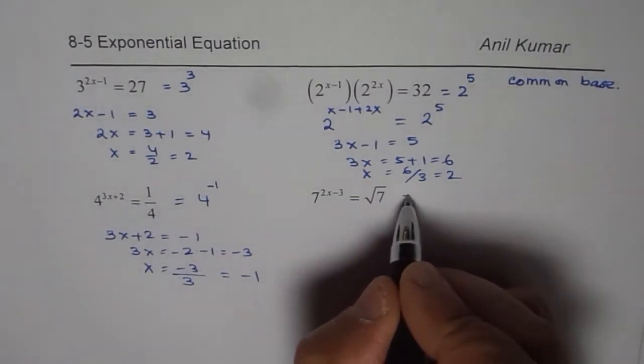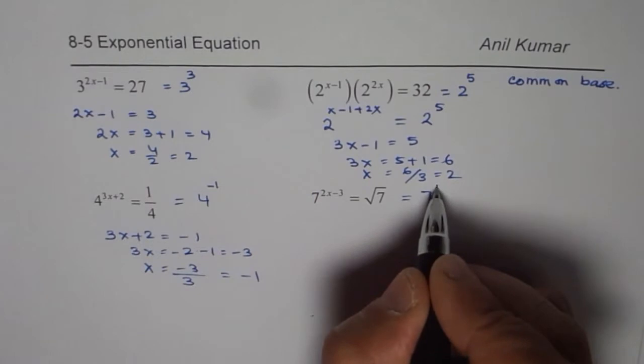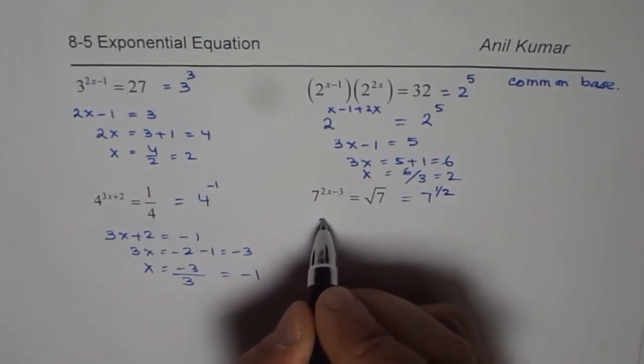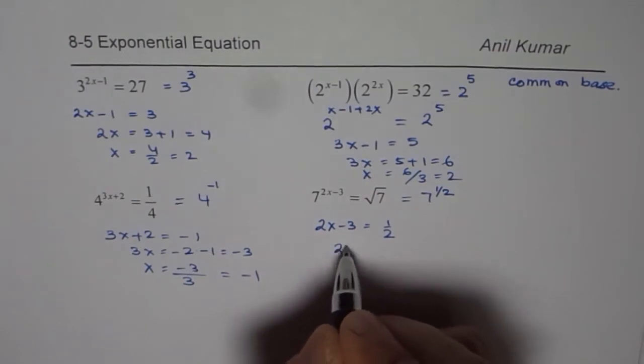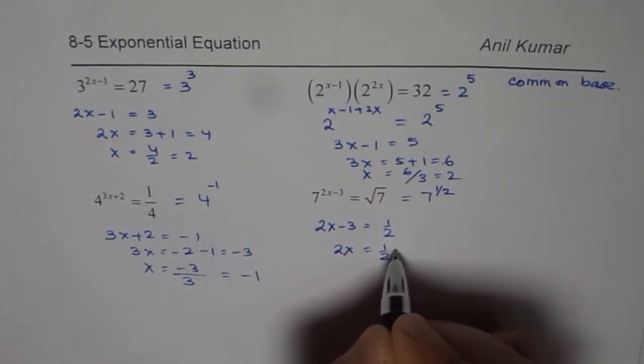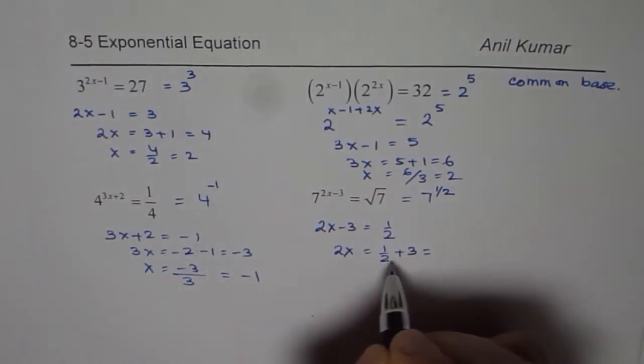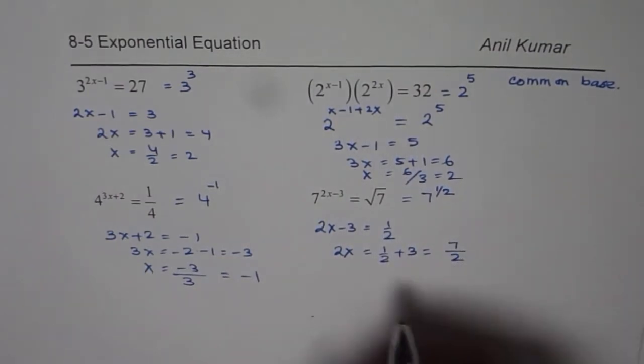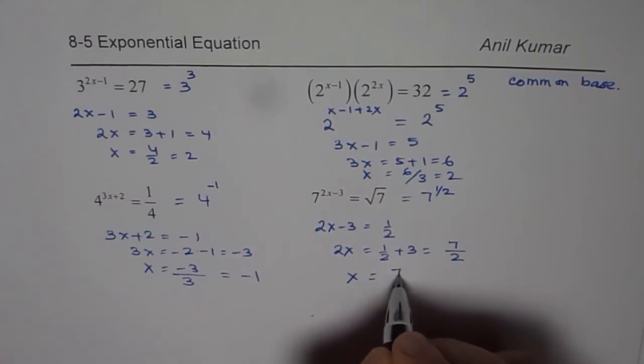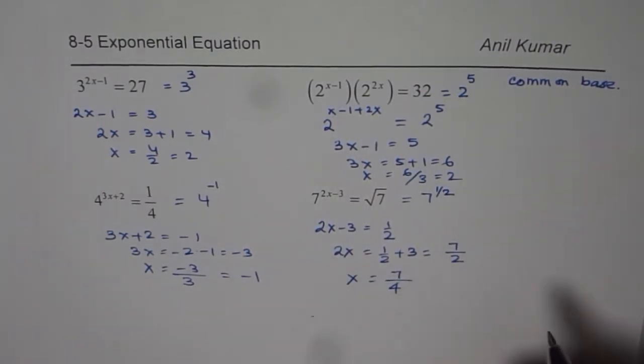Here we can write 7 square root means 7 to the power of half. Now we have 2x minus 3 equals to half. So we have 2x equals to half plus 3, which you could write as 3 times 2 is 6, 6 plus 1 is 7. So 7 over 2. x is equal to 7 over 4. So it is 7 over 2 divided by 2. So x is 7 over 4. So that is how you can actually solve all questions which are kind of like this.